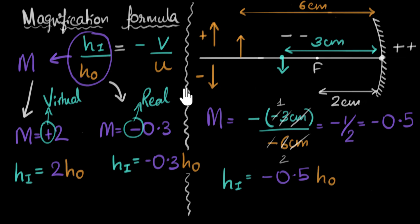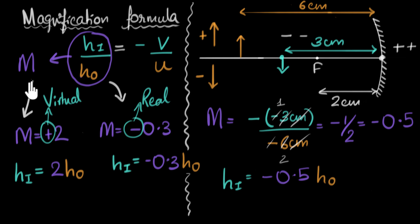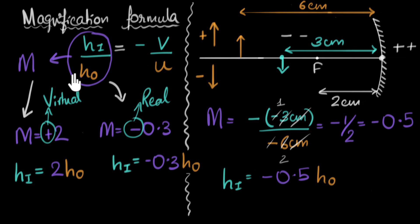To quickly summarize: we learned the magnification formula. Magnification is defined as the ratio of image height to object height. The sign of magnification tells us whether the image is real or virtual, and the number tells us how magnified the image is. When object and image distances are given, we use M = −V/U. If you're interested in where this formula comes from, there's a bonus video where we derive it.